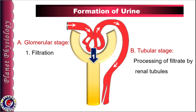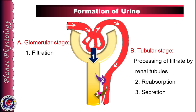As the filtrate moves through the various segments of the tubules, important constituents are reabsorbed back into the blood. This process is known as reabsorption and it plays an important role in urine formation. Certain substances which need to be removed in larger quantities are secreted into the renal tubules from peritubular capillaries. Secretion mainly determines the amount of hydrogen, potassium and other substances to be excreted in the urine.